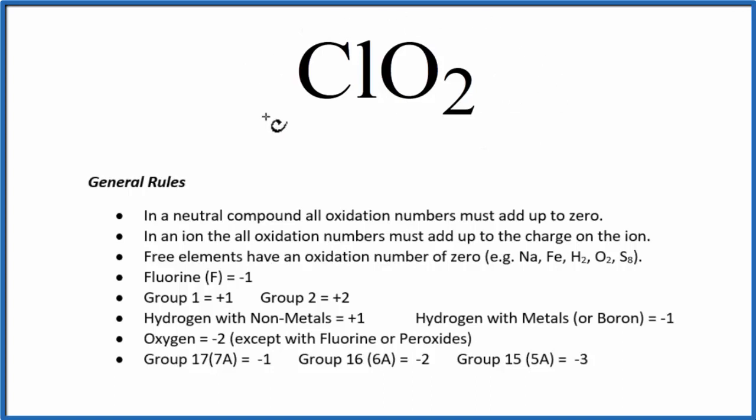So we see that this is a neutral compound. There's no plus or minus out here. It's not an ion. And in a neutral compound, the oxidation numbers of each element, chlorine and these two oxygens, they'll all add up to zero.